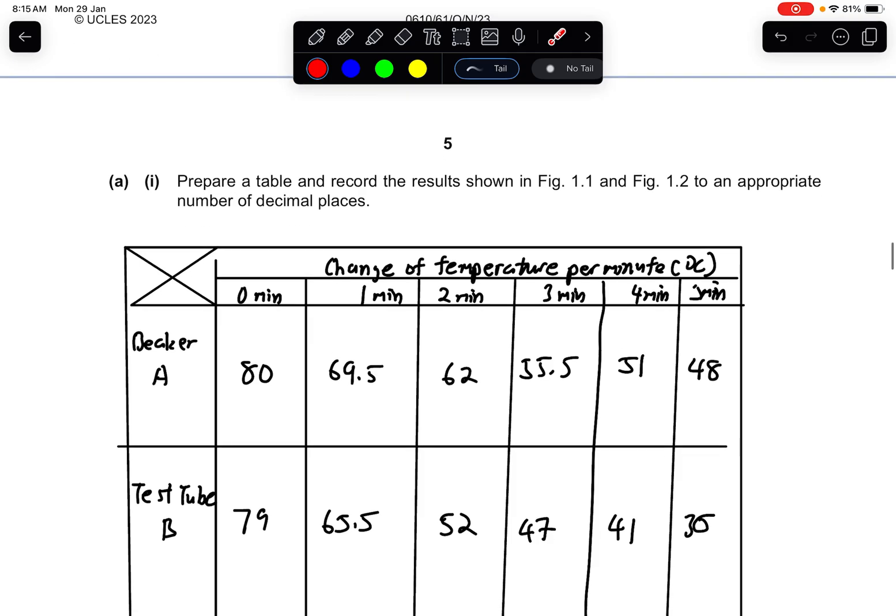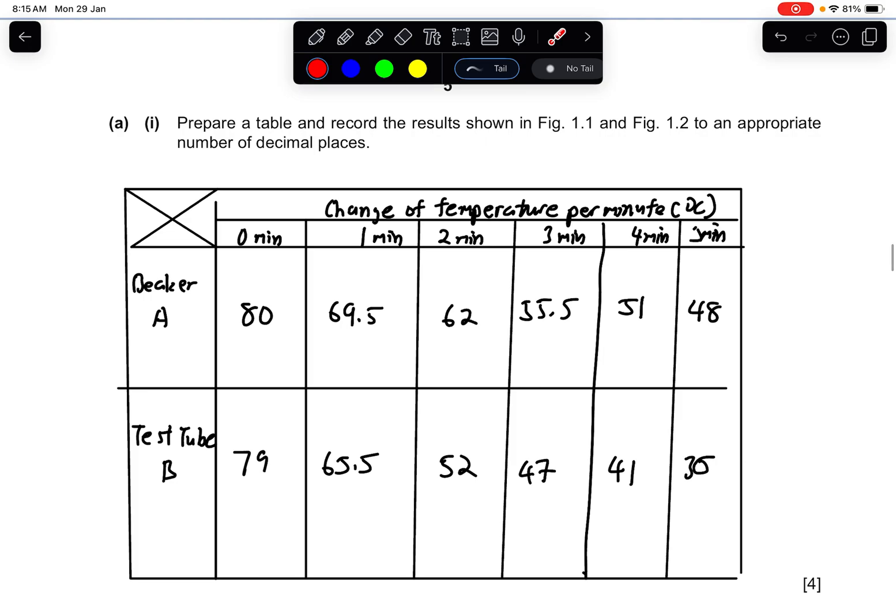Prepare a table and record the results shown in figure 1.1 and figure 1.2 to an appropriate number of decimal places. This is what I have done. I think I forgot to put, if you want to remain the same significant figures, put all 0.0.